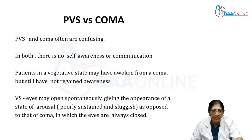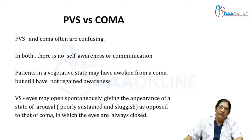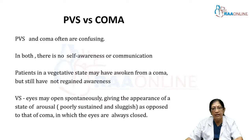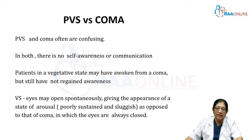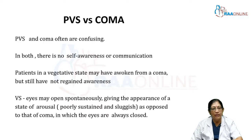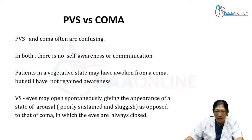The key difference between persistent vegetative state and coma is that in both states, self-awareness and communication are absent. However, vegetative state applies to someone who has come out of or woken from a coma but has not yet regained awareness. The vegetative state person may open the eyes spontaneously, giving the appearance of arousal — as opposed to coma where the eyes are always shut — but there is no meaningful response to any stimuli.